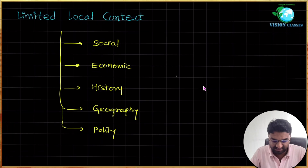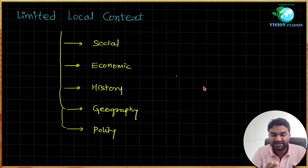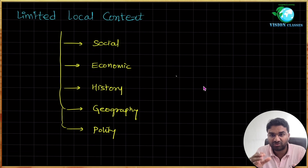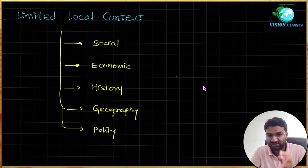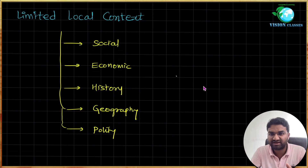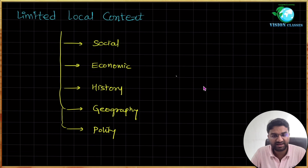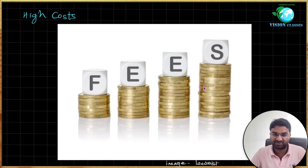The second shortcoming is limited local context. The social, economic, historical, and geographic qualities of each region are different, but the Cambridge curriculum is designed to be globally applicable. This means it sometimes lacks specific local culture, history, and societal issues, which can disconnect students from their own region. It is more related to the western world — for example, history and literature are largely extracted from European history, lacking local understanding for IGCSE and A Level students.